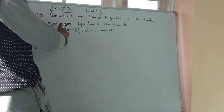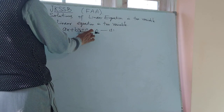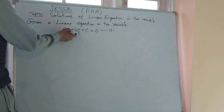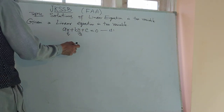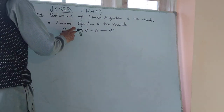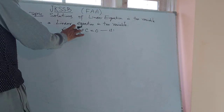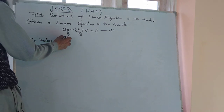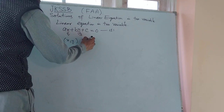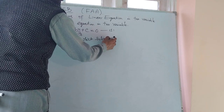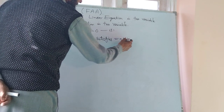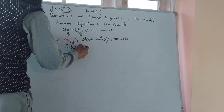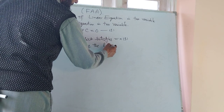Given a linear equation in two variables: AX plus BY plus C equal to 0. The values of X and Y which satisfy this equation are called the solutions of the linear equation.